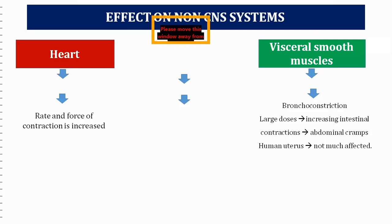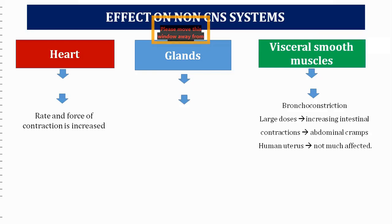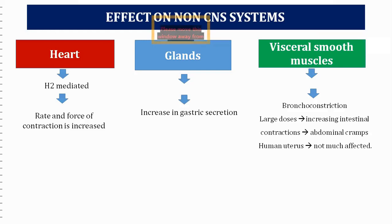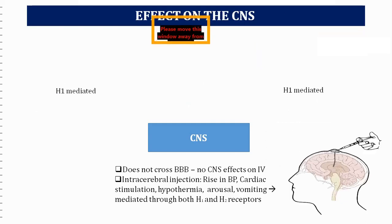These uterine effects are due to H1 and H2 receptors. Regarding glands, specifically the parietal cells, histamine increases gastric secretion, and this is mediated by H2 receptors — so it is an H2 receptor-mediated effect.